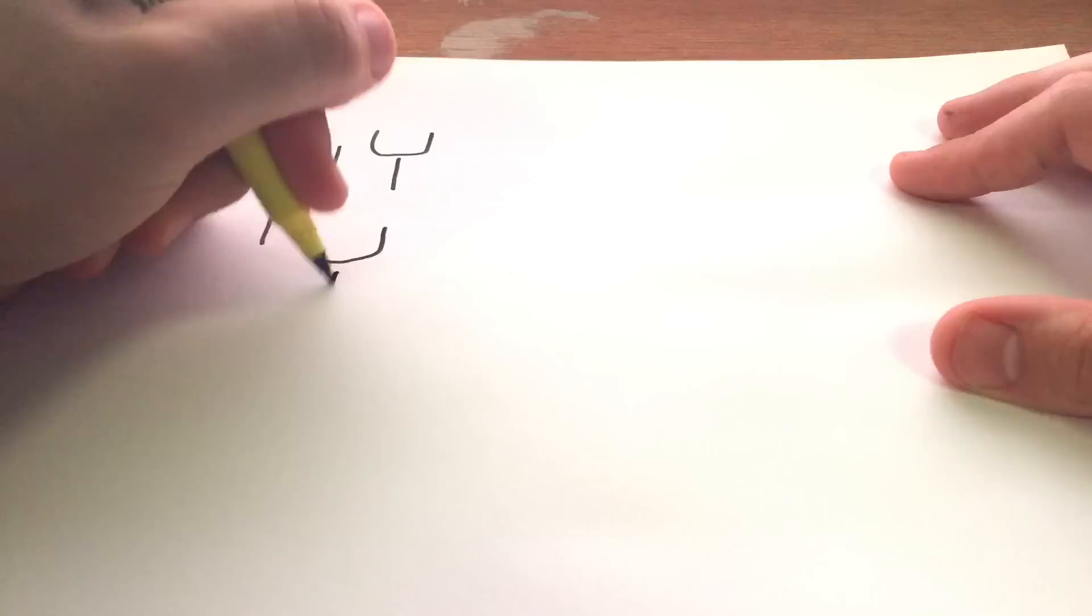So within our brain we have things called receptors. Now there are many different types of receptors but today we're going to focus on ones called the adenosine receptors. As you can see here I'm drawing them.